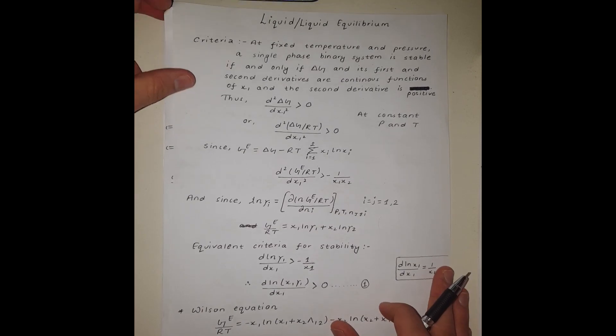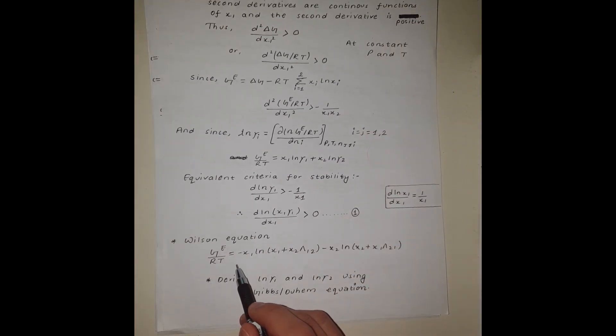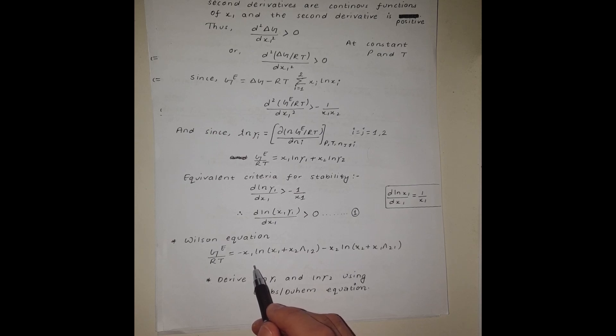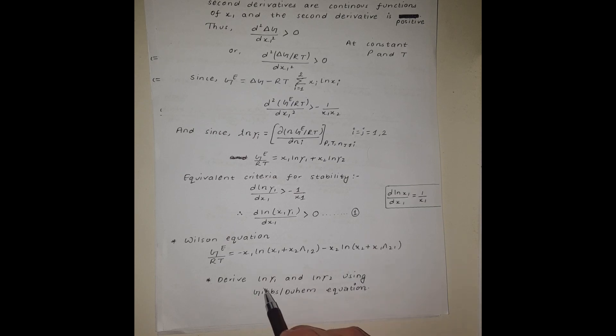Now let's talk about the Wilson equation. The Wilson equation is based on a local composition model, and the molar excess Gibbs free energy is given by a specific expression. We can also derive expressions for the activity coefficients of species one and two using the Gibbs-Duhem equation.